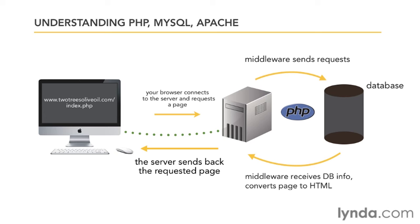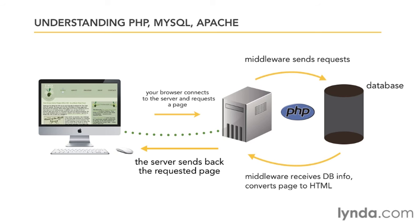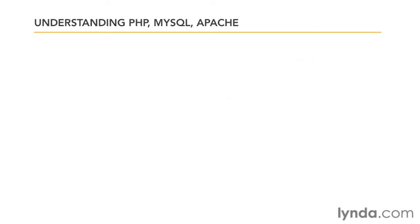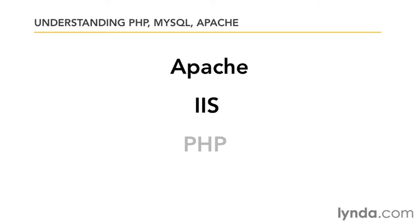Now that the page is created and consists of HTML and associated files, it is sent to the client to view. All of this happens in the blink of an eye. In order to run Joomla, you must have a web server configured with Apache or IIS, PHP, and MySQL, including the right versions of those pieces of software.